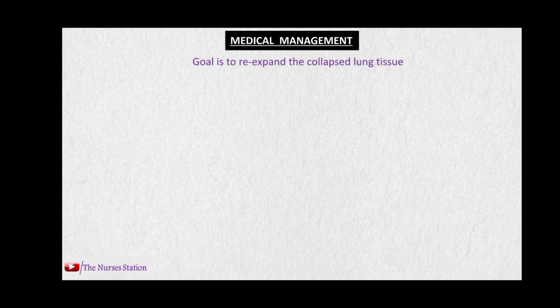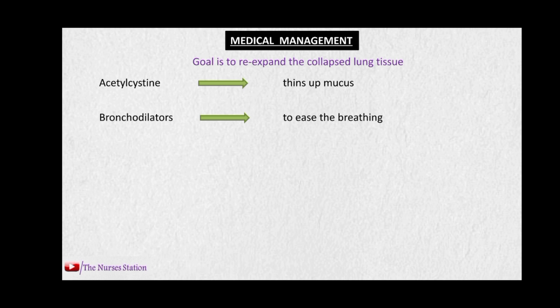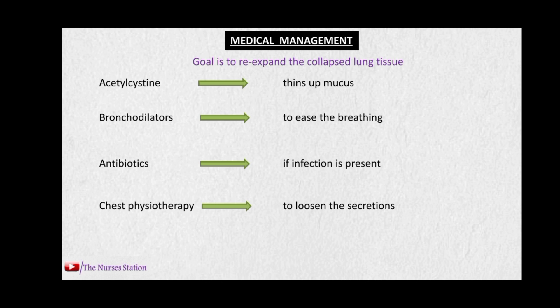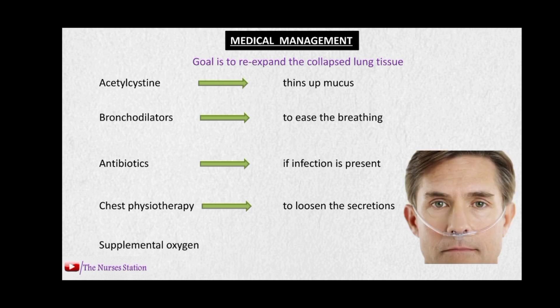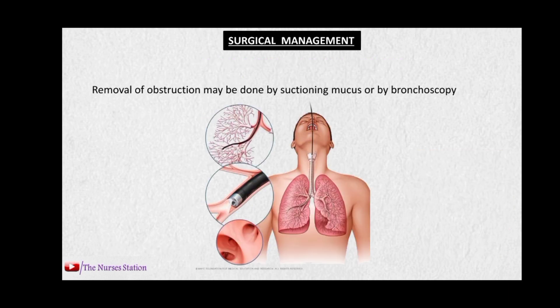The goal of medical management in atelectasis is to re-expand the collapsed lung tissue. Acetylcysteine is given to thin the mucus inside the airways so it can be easily removed. Bronchodilators are used to ease breathing by dilating inflamed airways. Antibiotics are given if infection is present or if airway inflammation is due to bacterial infection. Chest physiotherapy is employed to loosen secretions so they can be easily coughed up. Supplemental oxygen is given when there is a significant decrease in blood oxygen levels. If medical management fails, surgical management can be employed — the mucus is suctioned out if it is the cause of obstruction, or bronchoscopy can be used to remove a foreign body or any other obstruction.